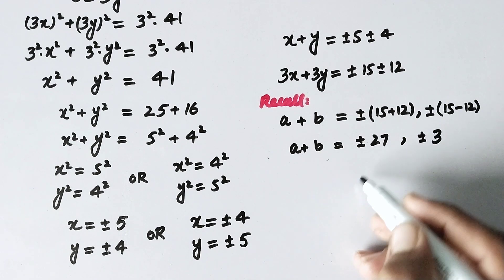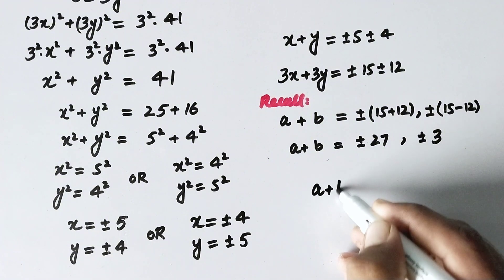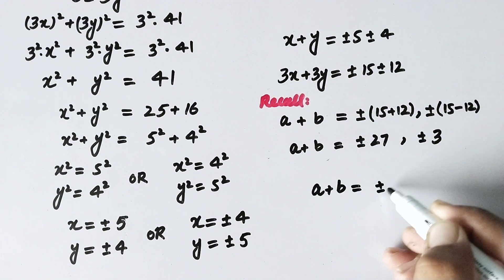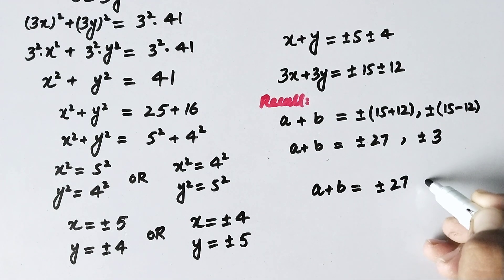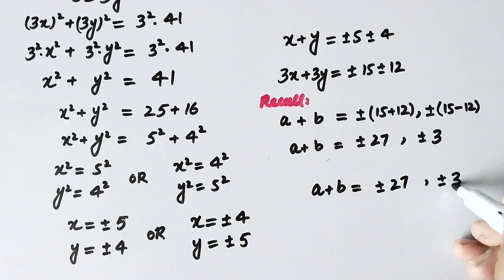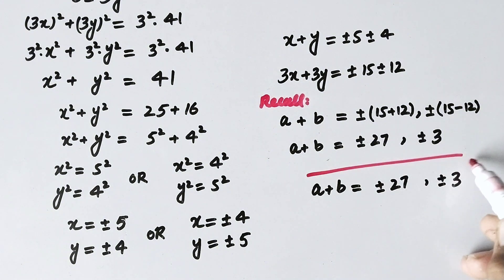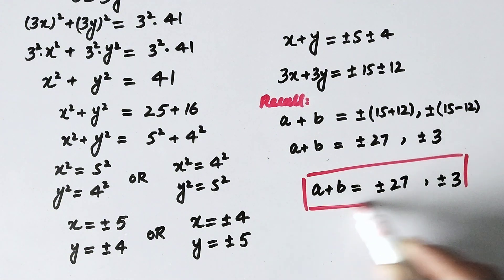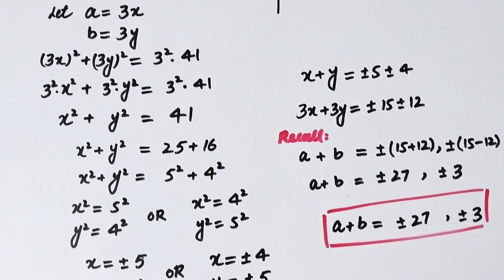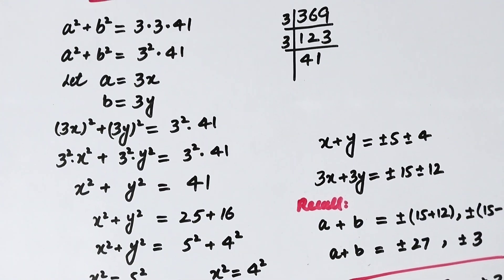So the values of a plus b are plus or minus 27 and plus or minus 3. That is the solution to this problem. I hope you liked the video — please subscribe to my channel for more videos. Thanks for watching.